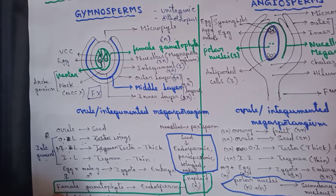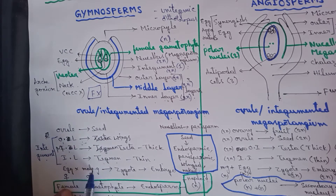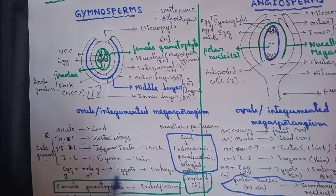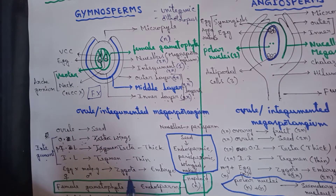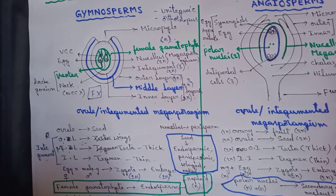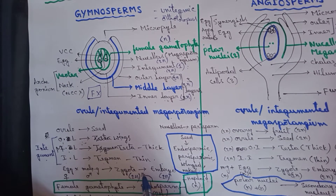Now coming to the female gametophyte: before fertilization between the egg and male gamete, the female gametophyte itself develops into endosperm, which is a haploid tissue. Hence it is called a pre-fertilization tissue. It is involved in giving nourishment to the zygote, which develops into embryo. After fertilization between egg and male gamete, the zygote is formed and this zygote is diploid, getting nourishment from the female gametophyte.